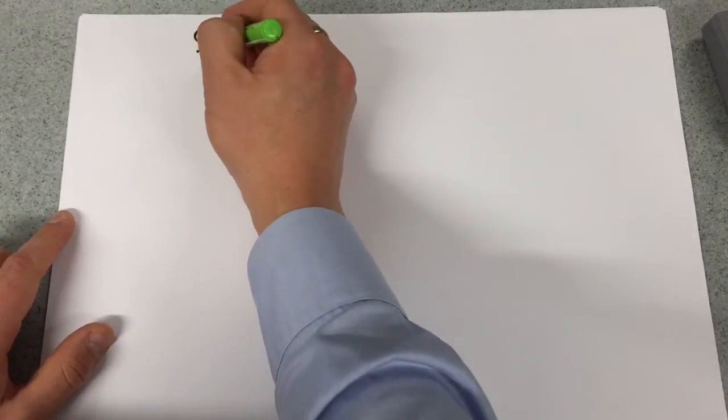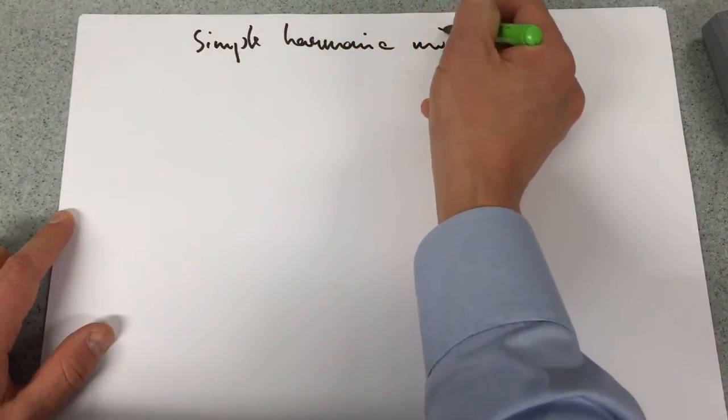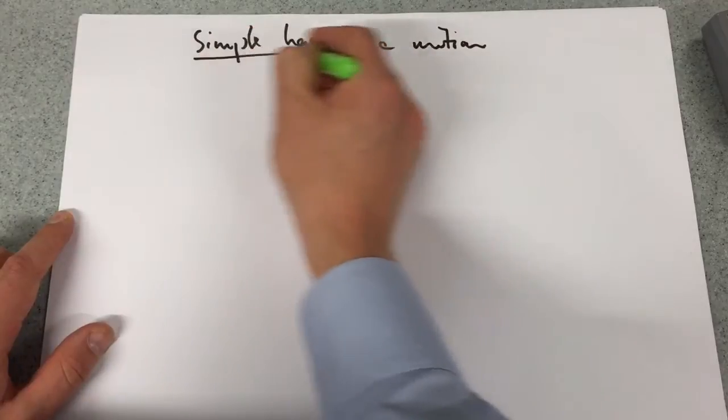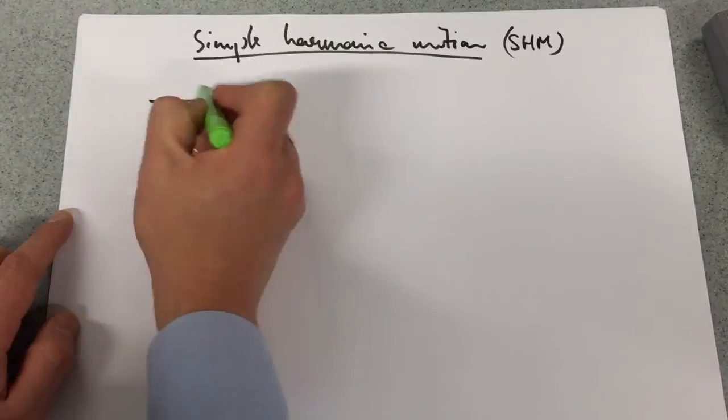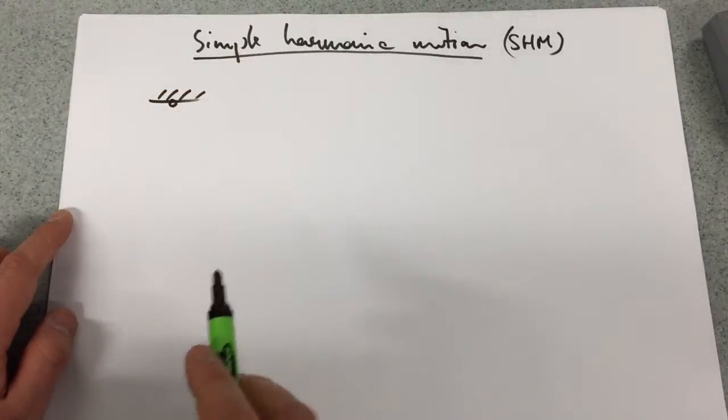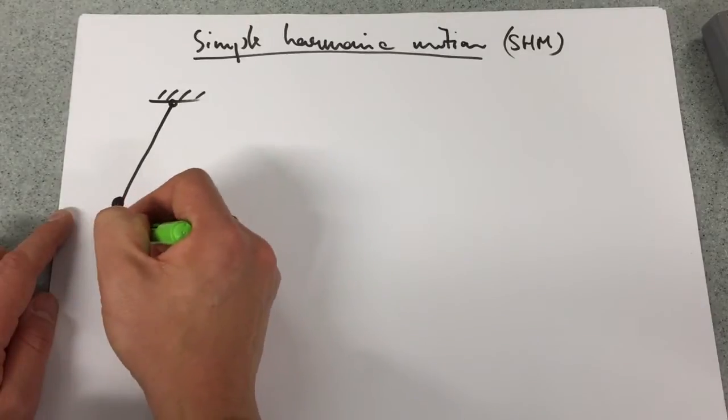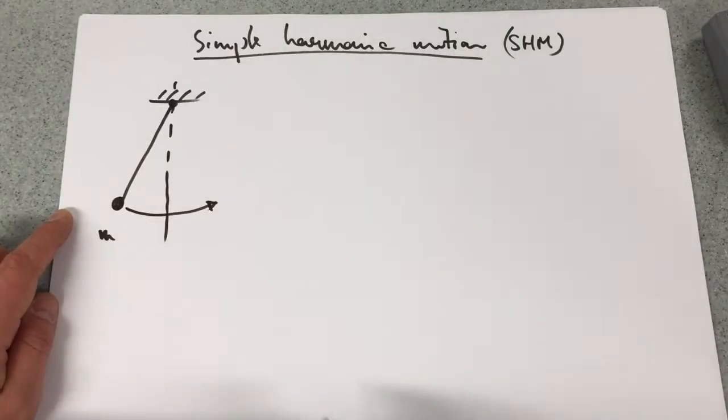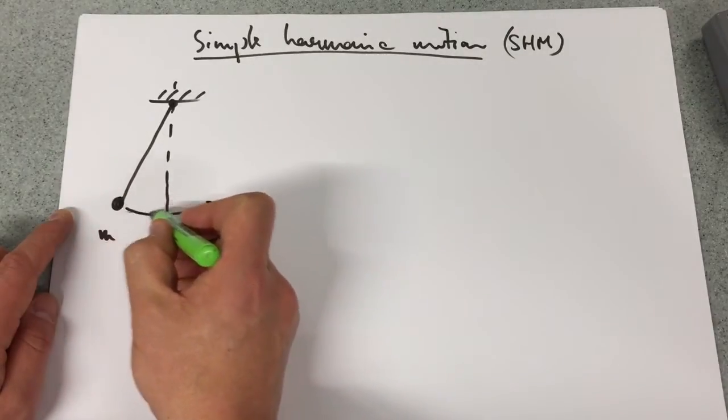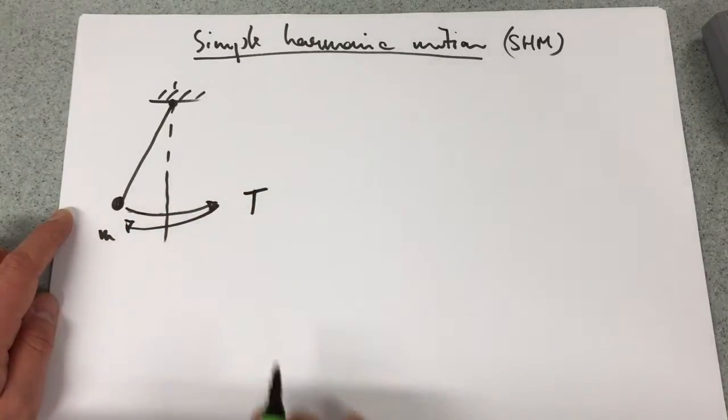Right, this is a second practical looking at simple harmonic motion, or SHM. The first one looked at mass on a spring, and this time we're going to look at a mass that's swinging on a pendulum, and we're going to look for the time it takes to go there and back again, i.e. the time period.